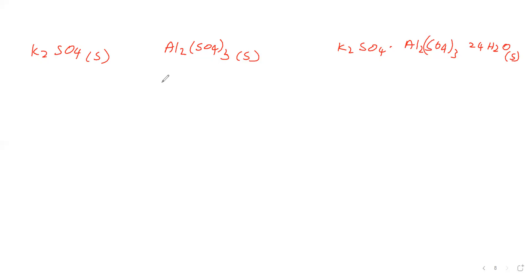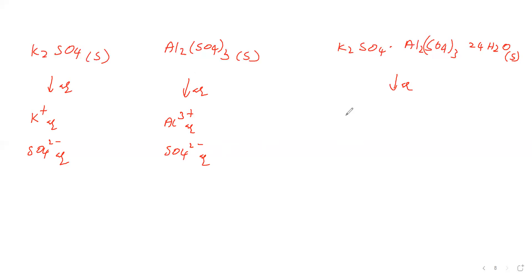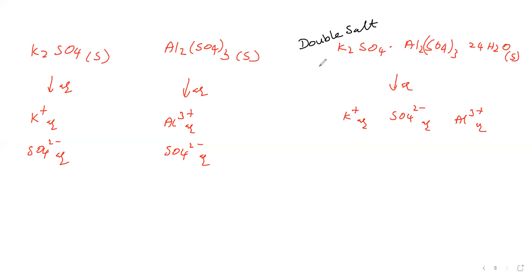Now we will take them in aqueous solution. K₂SO₄ will show K⁺ ions and SO₄²⁻ ions. Dissolving Al₂(SO₄)₃ gives Al³⁺ ions and SO₄²⁻ ions. The addition compound also behaves like simple salts in aqueous solution. Such a type of addition compound is called a double salt. It shows dissimilarities from its simple salts in solid state but shows similarities in aqueous solution.